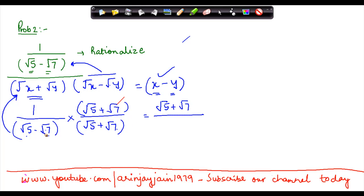This is similar to this, so this will give me 5 minus 7, or minus under root 5 plus under root 7 divided by 2. 5 minus 7 is minus 2, so you can take 2 here and take minus as the whole sign. So again by doing this I have rationalized the denominator.